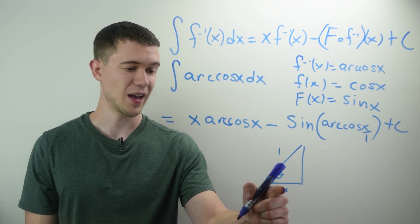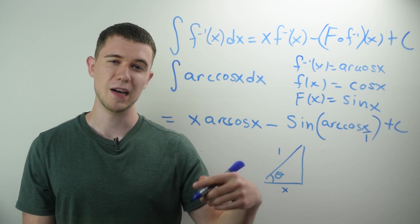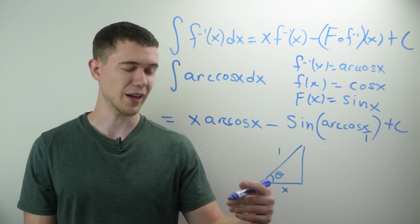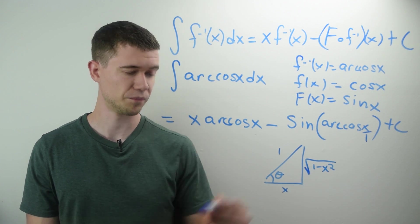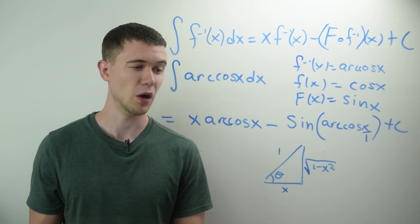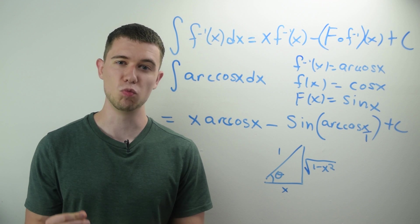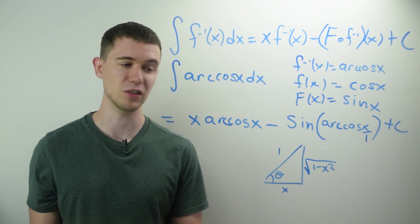In this case, x squared plus this side squared equals 1 squared. If I mess around and solve for that, if I solve for the third leg of that triangle, I'm going to get the square root of 1 minus x squared.